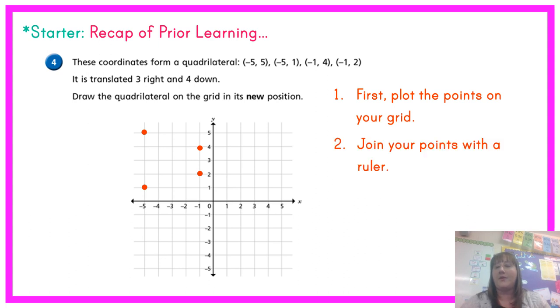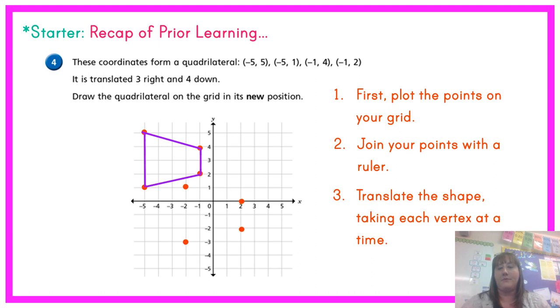Second, join your points with a ruler to create a shape. Once you've done this you then need to translate the shape taking each vertex, which is the mathematical word for corner, one at a time. And move them 3 right and 4 down. And finally join your points with a ruler. And you have translated your shape.